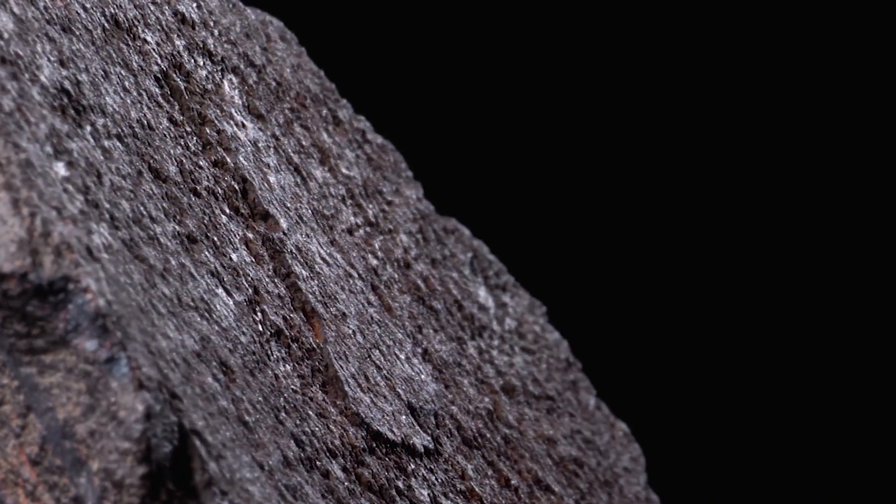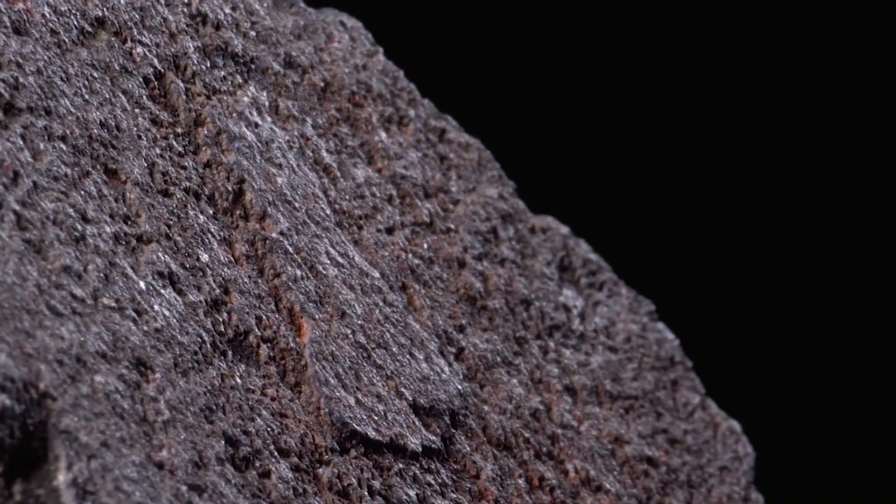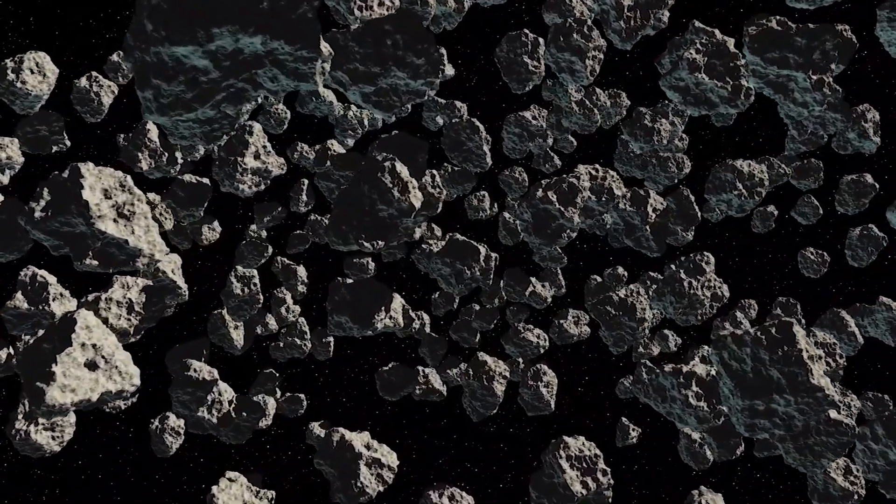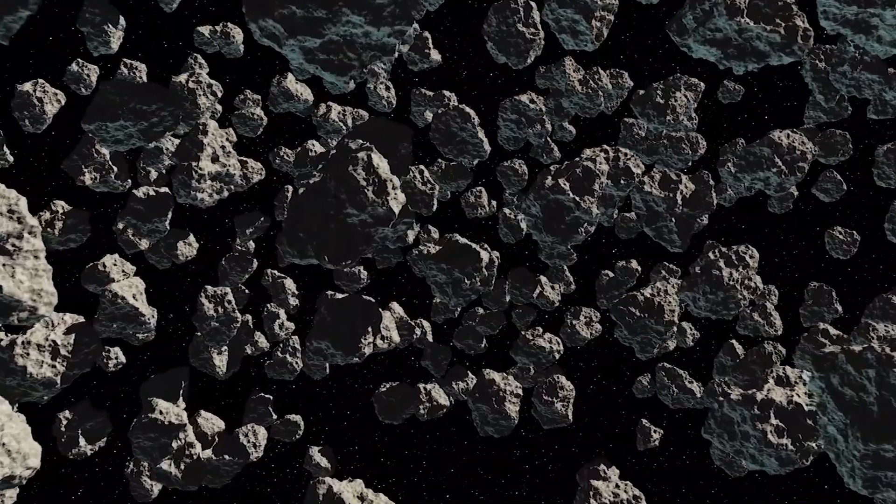Isotope analysis of meteorites suggests that about 4.5 billion years ago, our solar system may have formed in less than 200,000 years.